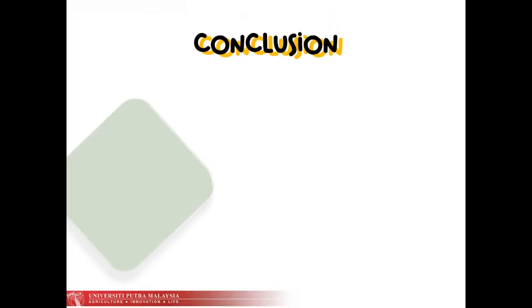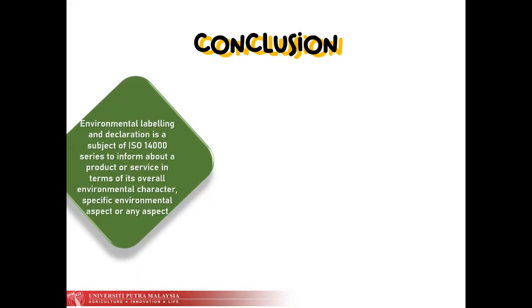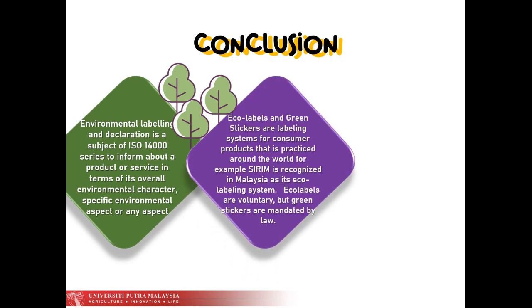As a conclusion, Environmental Labeling and Declaration is a subject of ISO 14000 series which informs about product or service in terms of its overall environmental character, specific environmental aspect, or any aspect. Ecolabels and green stickers are labeling systems for consumer products practiced around the world, for example SIRIM which is recognized in Malaysia as its ecolabeling system.